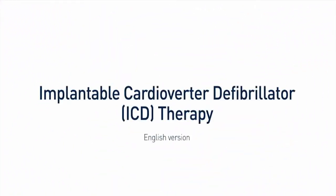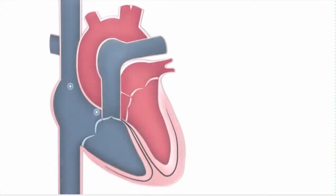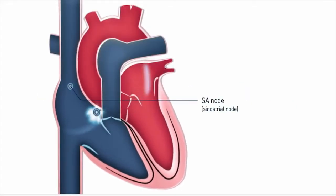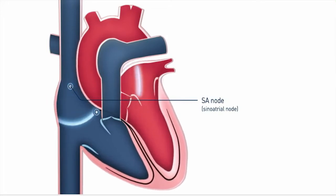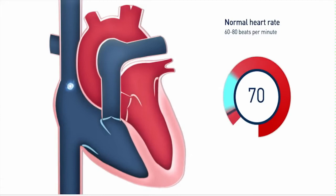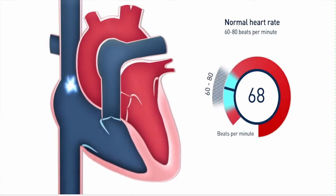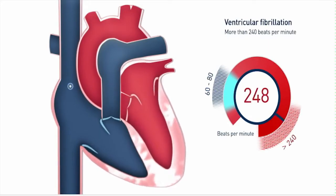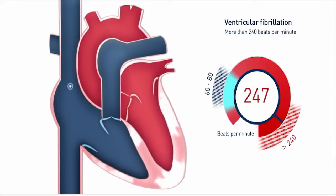The next defibrillation device is AICDs. Automatic Implantable Cardioverter Defibrillators, AICDs, are designed to detect and correct ventricular tachycardia or ventricular fibrillation. Programmable therapies include anti-tachycardia pacing for ventricular tachycardia and/or defibrillatory shocks when appropriate.